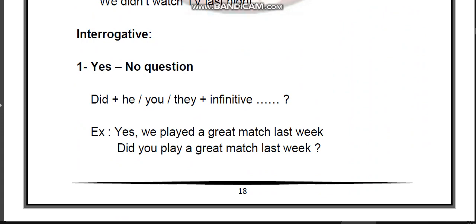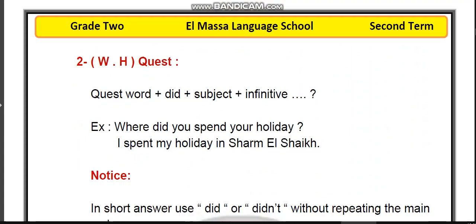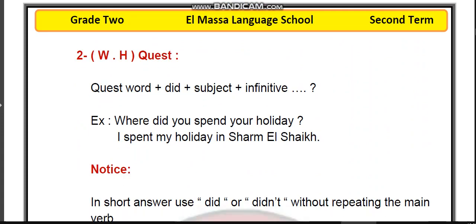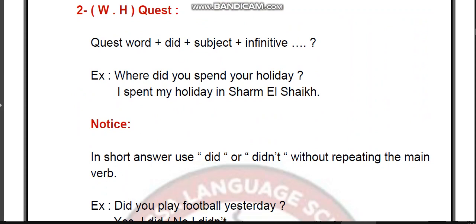For Yes/No questions: Did + subject + verb infinitive. Example: 'Did you play a great match last week?' — 'Yes, we did.' / 'No, we didn't.' For Wh- questions: Wh-word + did + subject + verb infinitive. Example: 'Where did you spend your holiday?' — 'I spent my holiday in town.'